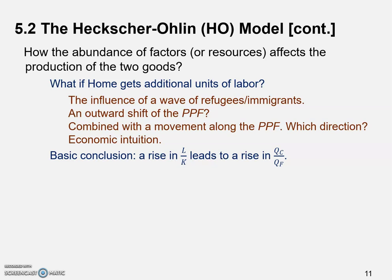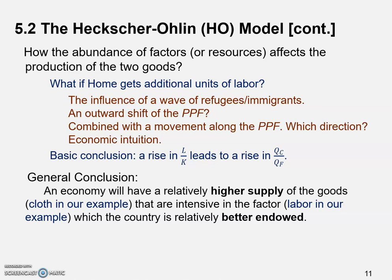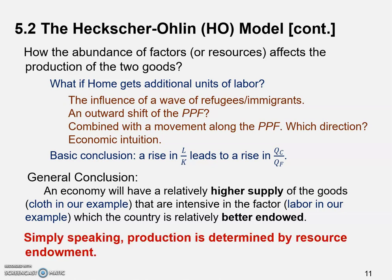The general conclusion is: an economy will have a relatively higher supply of goods that are intensive in the factor which the country is relatively better endowed with. In this example, that's cloth, which is intensive in labor. Simply speaking, production is determined by resource endowment — a country tends to produce more of the products which use the better-endowed factor more intensively.